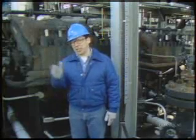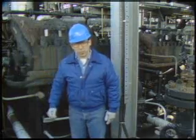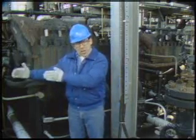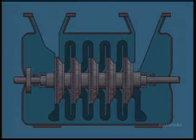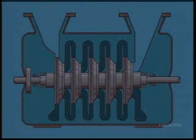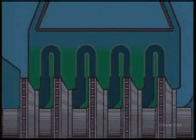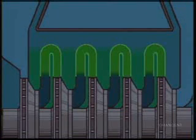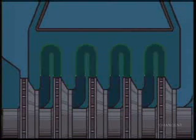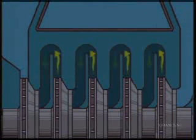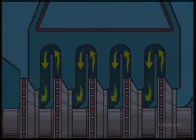Now let's look at how each stage in a multi-stage centrifugal compressor is separated from the next. All the parts that make up one stage of a multi-stage centrifugal compressor can be found on a single stage compressor. One stage is separated from the next by a specially designed part of the casing called the diaphragm. The adjacent walls of individual diaphragms form a diffuser passage. After the gas travels through the diffuser, it passes through the return channel of the diaphragm.